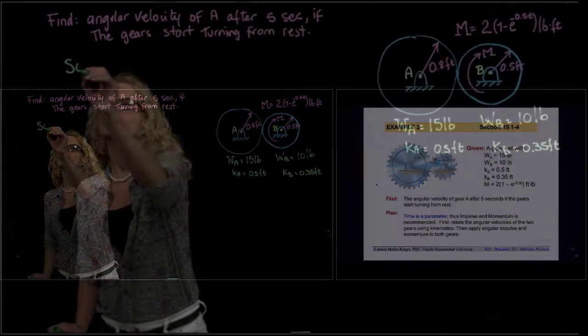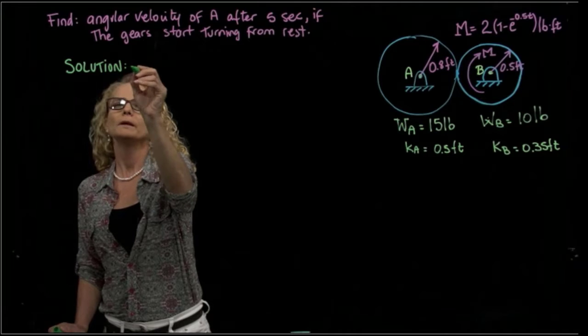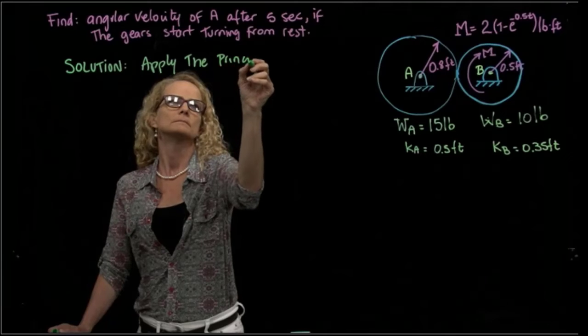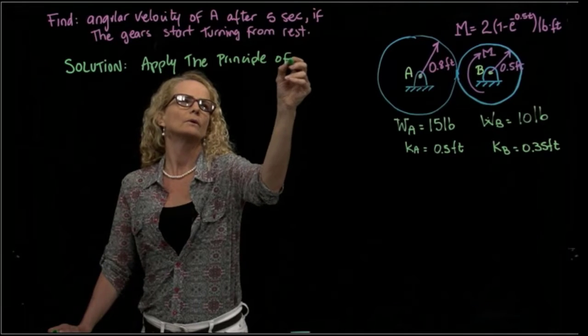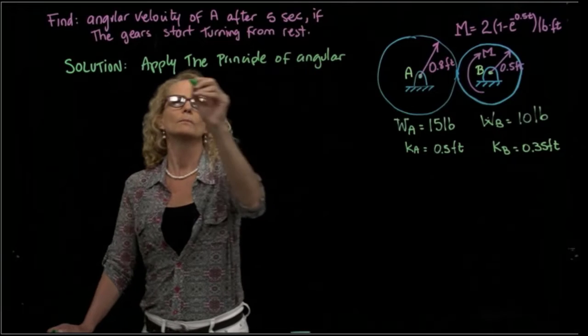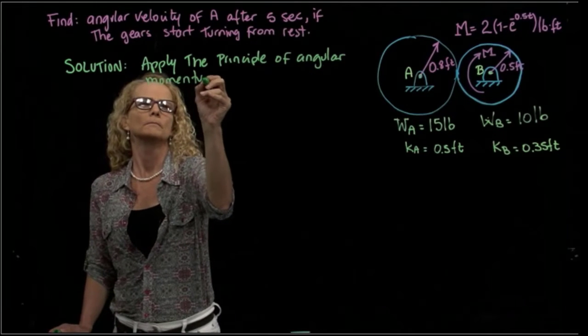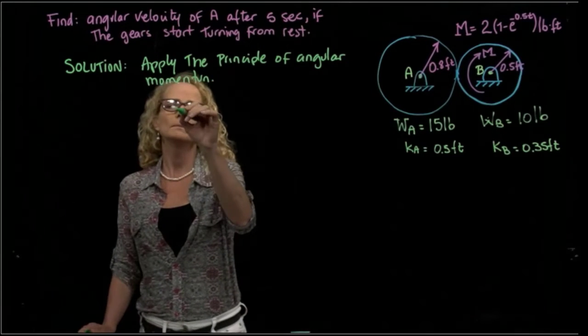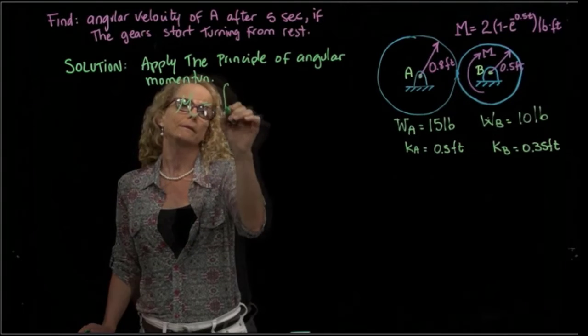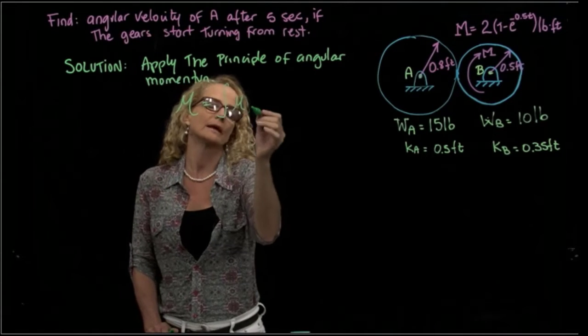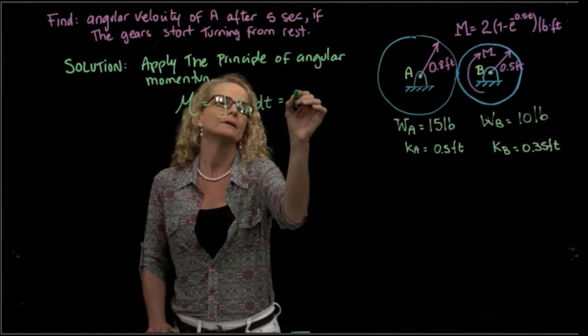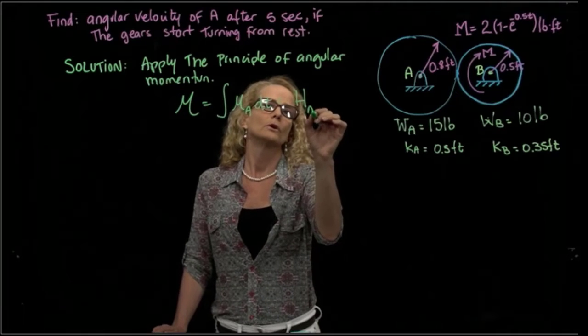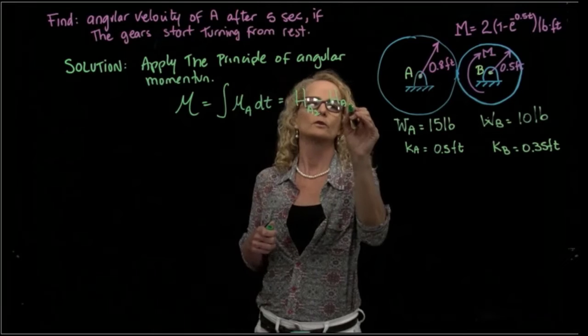The solution will be apply the principle of angular momentum. The principle of angular momentum is the angular impulse equals the integral of moments with respect to one point, in this case A or B, with respect to time. And that will be the difference between the angular momentum in position two minus the angular momentum in position one.